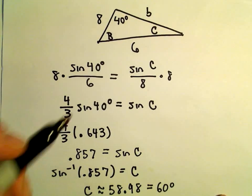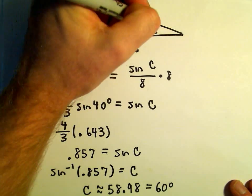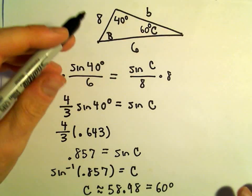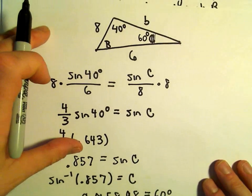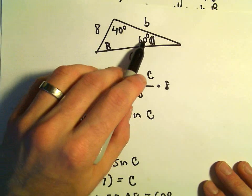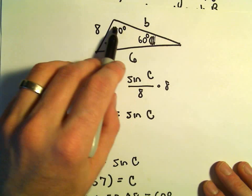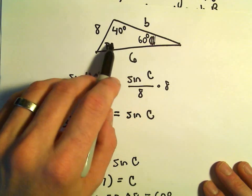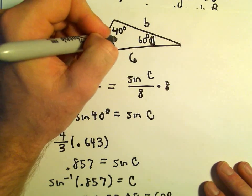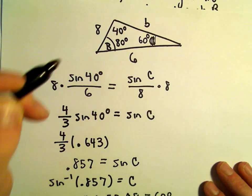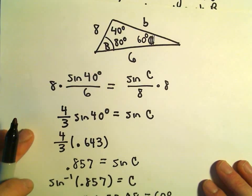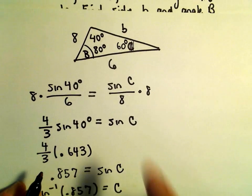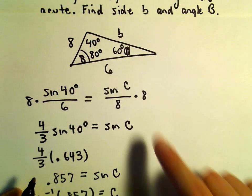We now know that angle C is 60 degrees. Since all the angles add up to 180, 40 and 60 is 100, so by default angle B would have to have a value of 80 degrees, so now they all add up to 180. And again, now we can use the law of sines to figure out our missing length for b.